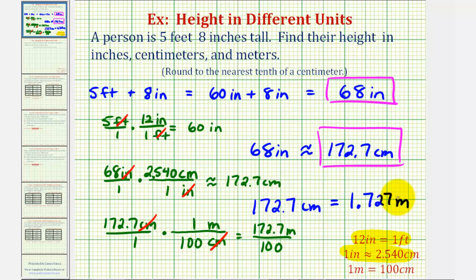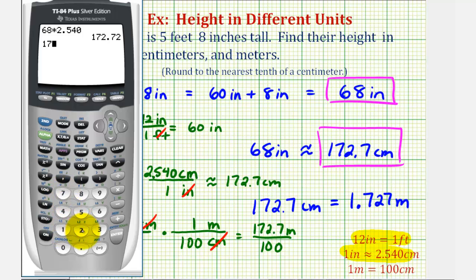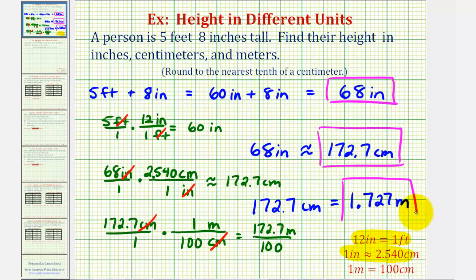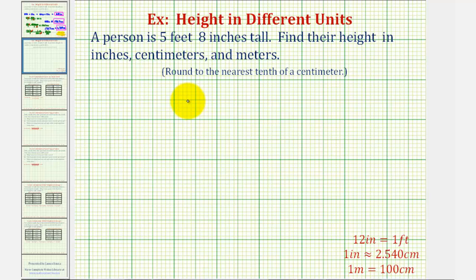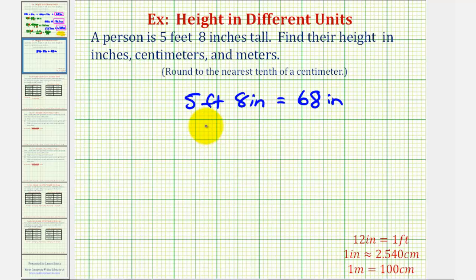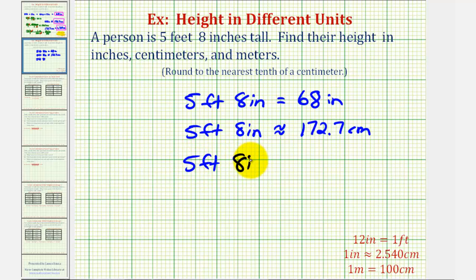Of course, if we need to, we can check this on the calculator. One hundred seventy-two point seven divided by one hundred is one point seven two seven. To summarize: we found five feet eight inches is equal to sixty-eight inches; five feet eight inches is approximately equal to one hundred seventy-two point seven centimeters; and five feet eight inches is approximately one point seven two seven meters.